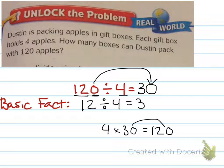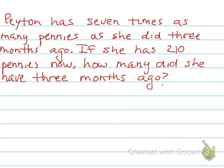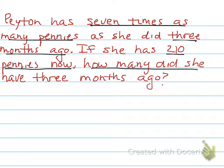Let's look at another word problem. You don't have to write all this down. Remember, just the important information. Payton has seven times as many pennies as she did three months ago. If she has 210 pennies now,